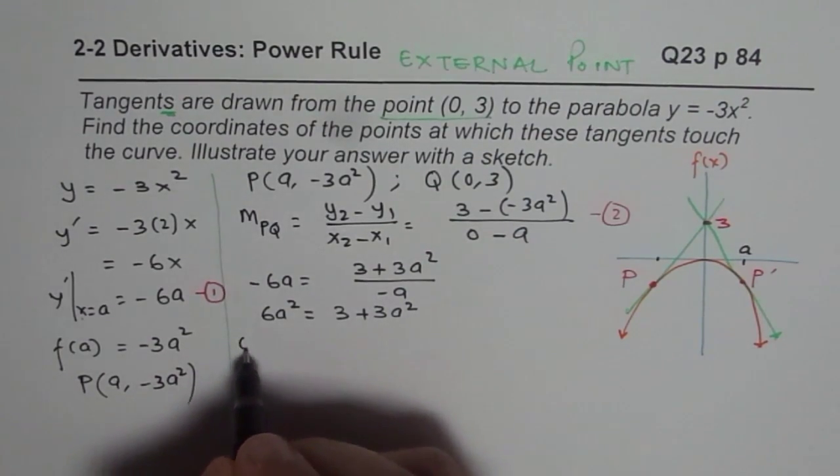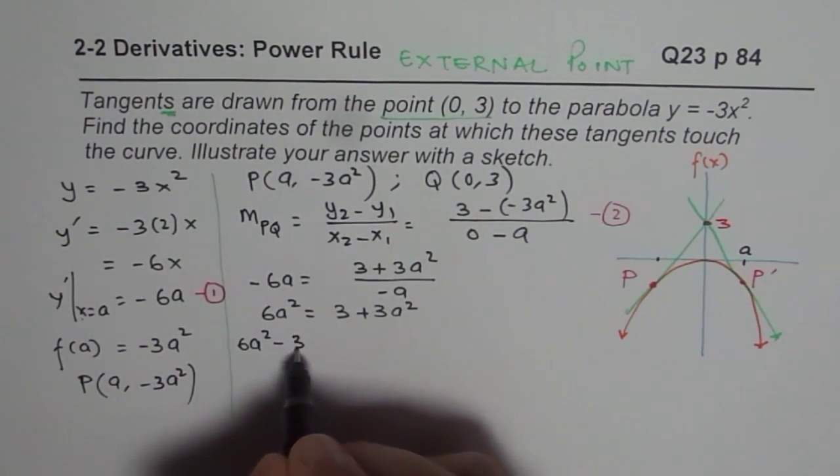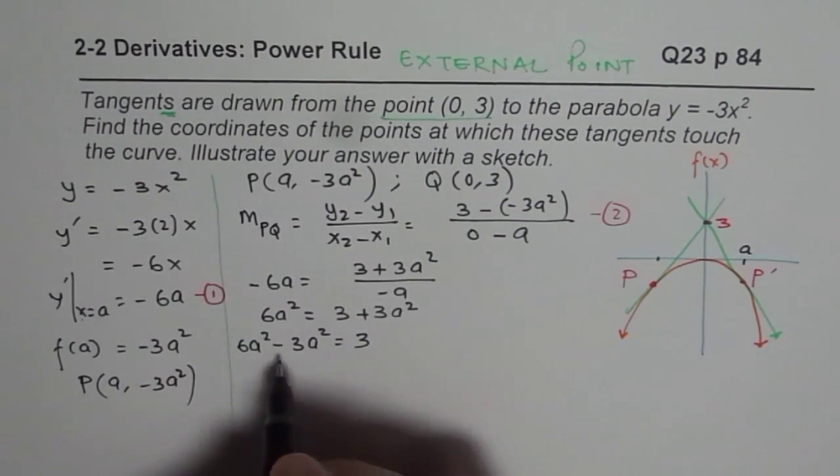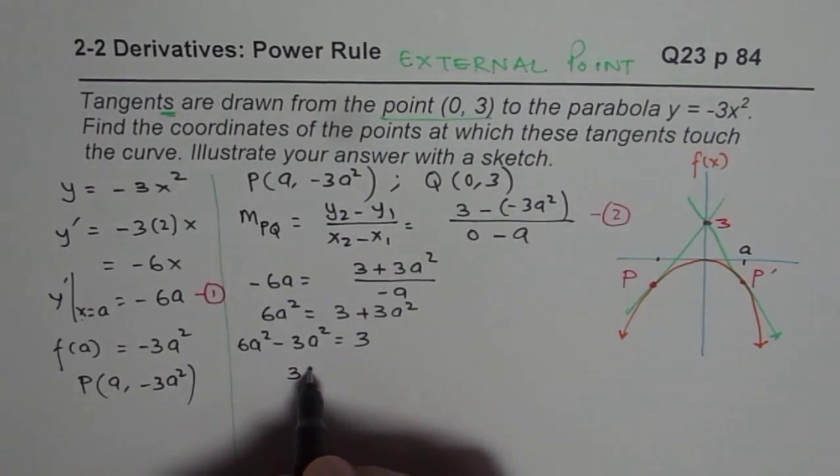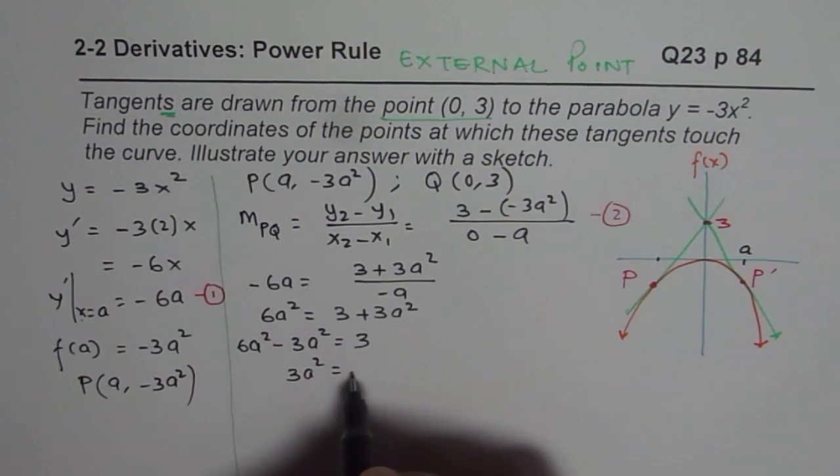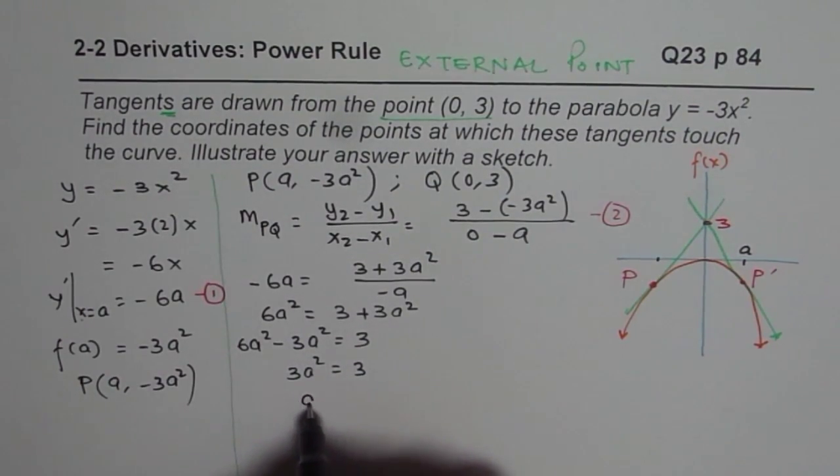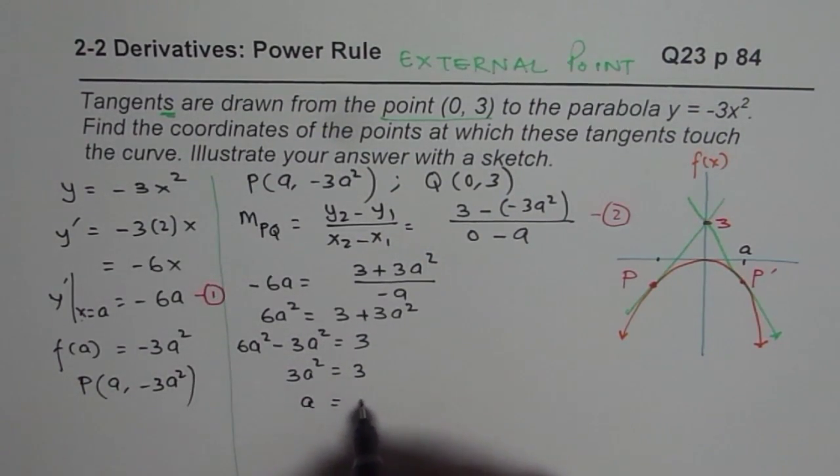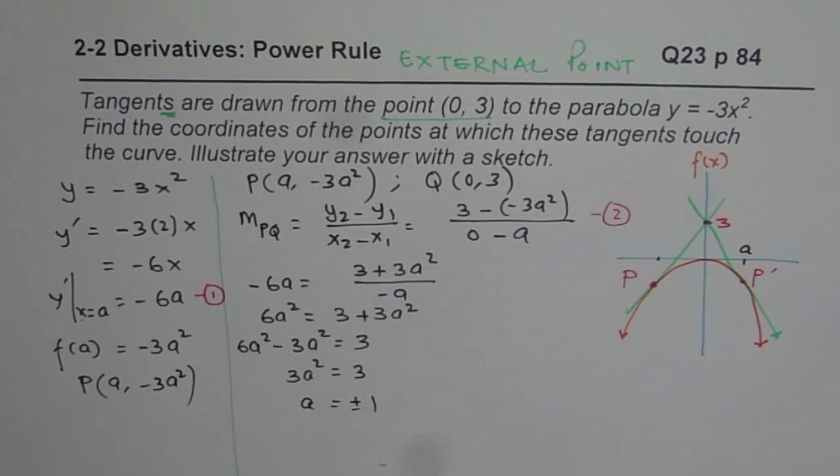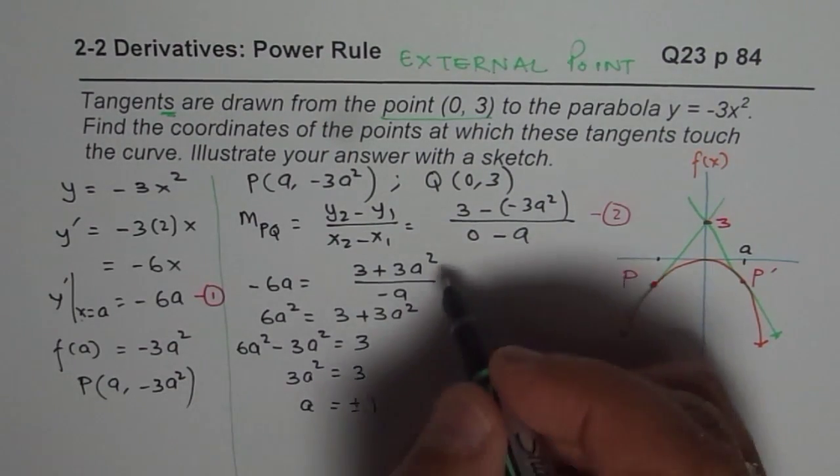6a² - 3a² = 3 or 3a² = 3 or A equals to plus minus 1. So plus minus 1 will give me 3 on both sides. So we find that the value of A is ±1.